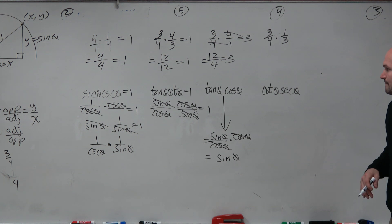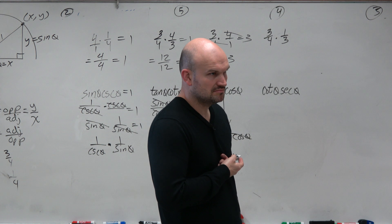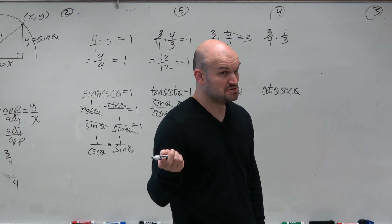And then what about over here? If I rewrite cotangent as 1 over tangent, does that simplify it? No. If I write cotangent as cosine over sine, does that simplify it? No.